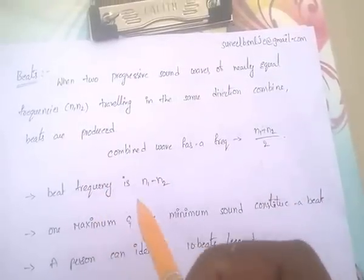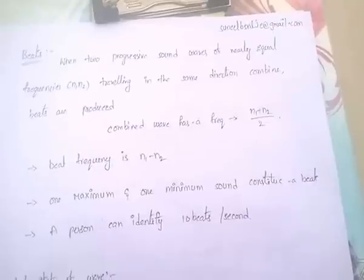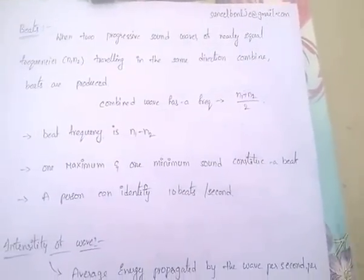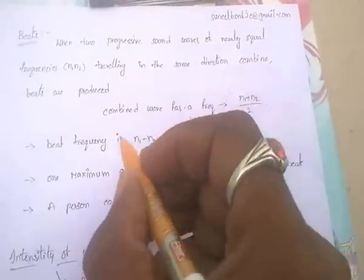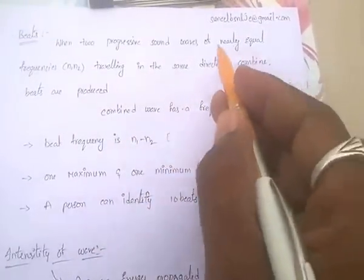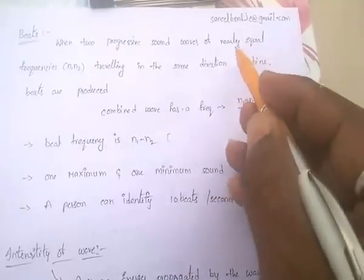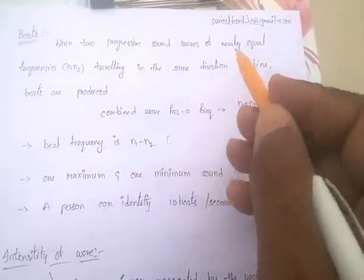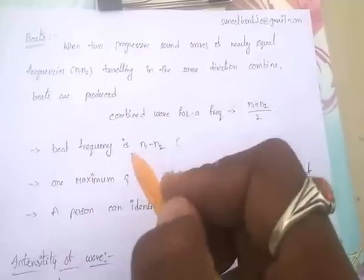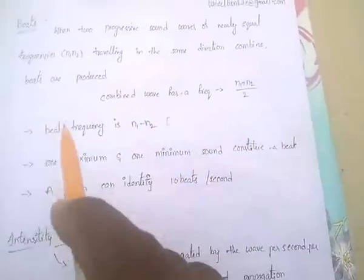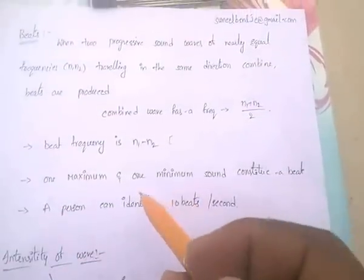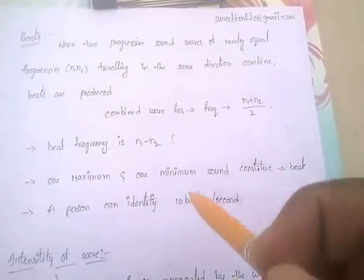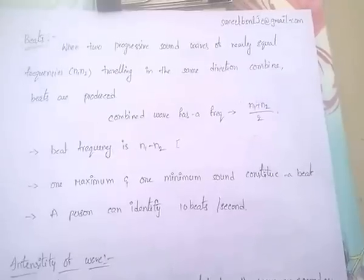The beat frequency is n1 minus n2, which is a very small value since n1 and n2 are nearly but not exactly equal. One maximum and one minimum sound together constitute a beat.